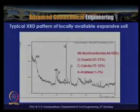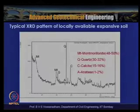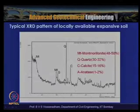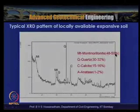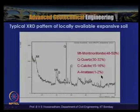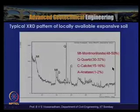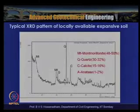A typical XRD pattern of locally available expansive soil (black cotton soil) is shown, with intensity of reflection on the y-axis and 2θ on the x-axis. Interpretation of this XRD pattern gives: montmorillonite (MT) 48–50%, quartz 30–32%, calcite 15–16%, and antasite about 1–2%. The expansive soil has about 50% montmorillonite as the predominant mineral.